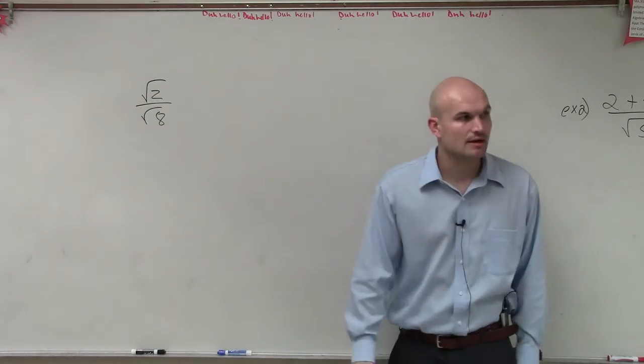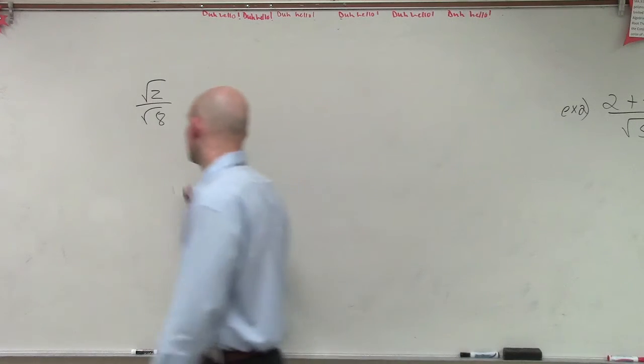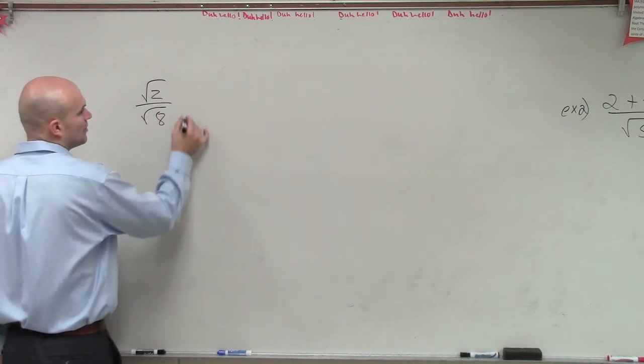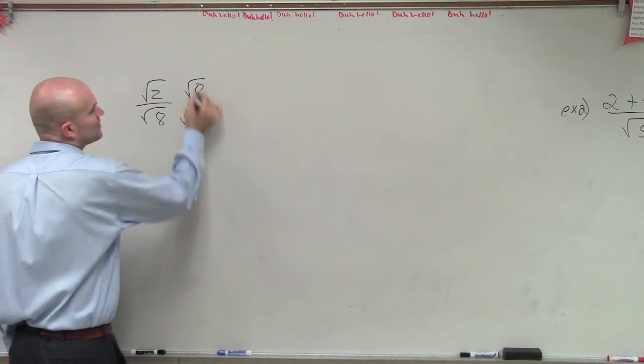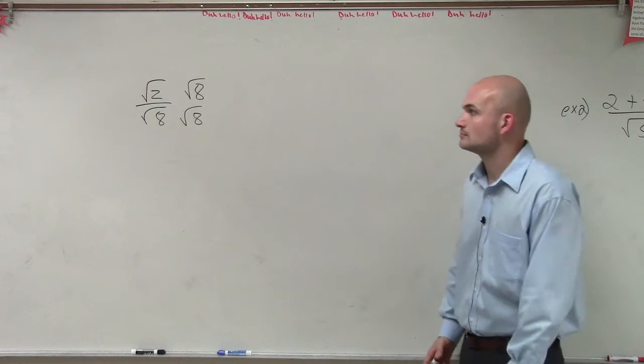if I have the square root of 2 divided by the square root of 8, one thing I can do if I want to rationalize the denominator is simply multiply by the square root of 8. So whatever your denominator is, whatever that square root is, you just multiply that on the top and bottom.